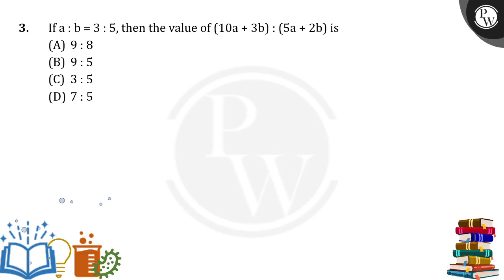Hello everyone. If a is to b is equal to 3 is to 5, then the value of 10a plus 3b is to 5a plus 2b is equal to how much? So here it was given that a is to b is equal to 3 is to 5.